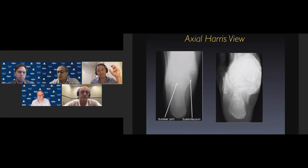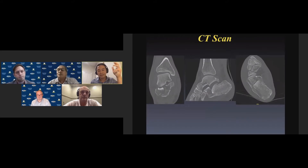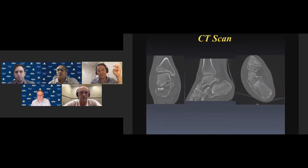On the axial Harris view, it typically shows that the length of the calcaneus is shortened, the tuberosity is typically in slight varus, and it's often laterally displaced. A CT scan is really important because it demonstrates the fracture in its full extent. On the coronal view you can assess the degree of comminution of the posterior facet, which has implications for prognosis under the Sanders classification.